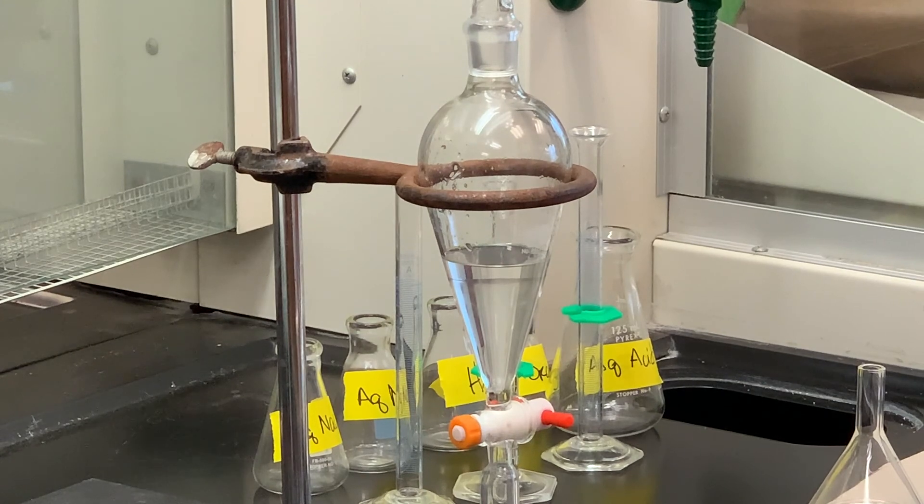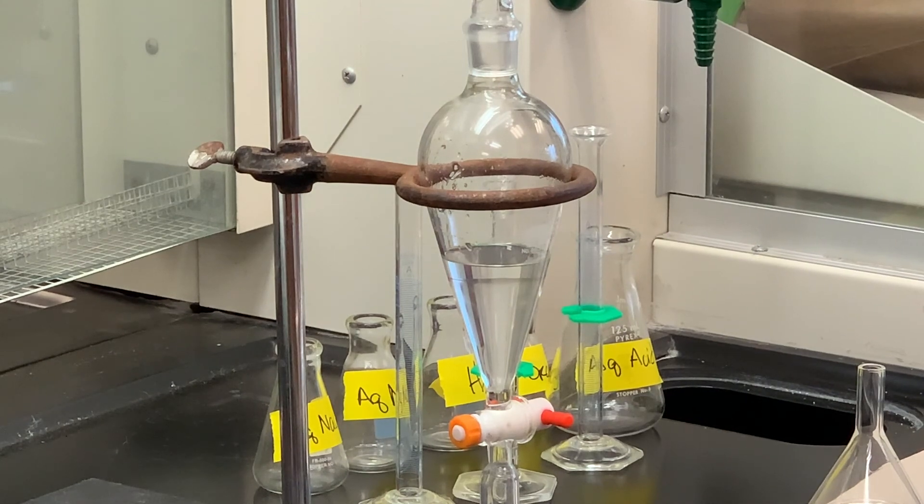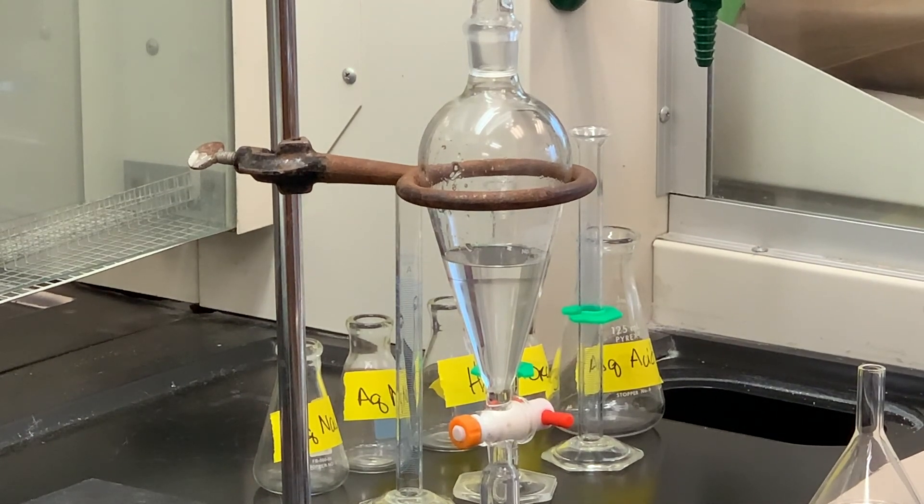The tertiary substrate is very reactive toward the SN1 mechanism. So everything should be converted at this point. But now we have to go through the process and isolate our product. So we've got two layers here.